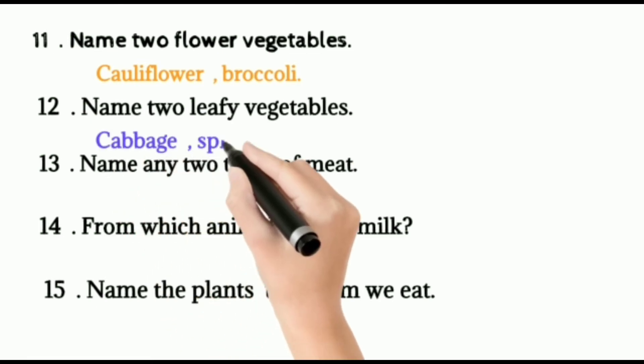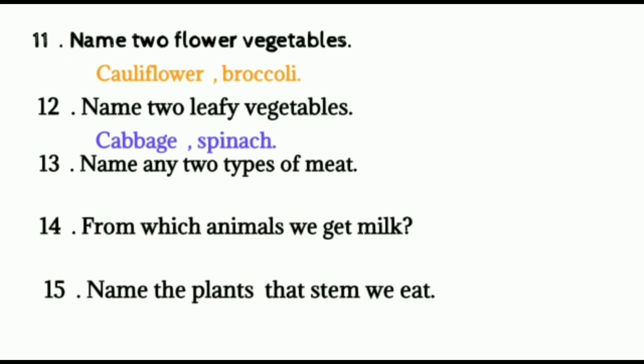Thirteen, name any two types of meat. That is chicken and mutton. Mutton is meat of a goat. Fourteen, from which animals we get milk. Cow, goat. In some places, camel's milk also used to drink. Fifteen, name the plants that stem we eat. Sugar cane, potato, ginger, onion, etc. From sugar cane, we get sugar cane juice, sugar and jaggery. Potato is underground stem. It is used as a vegetable.